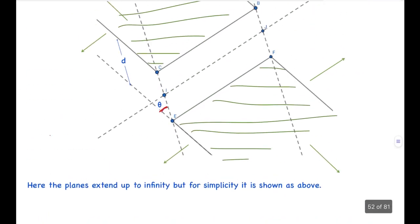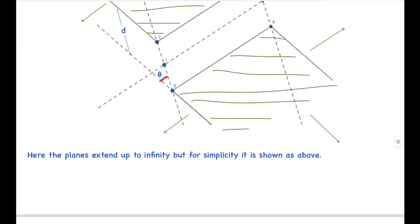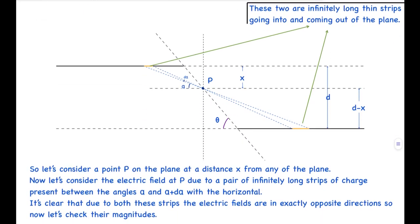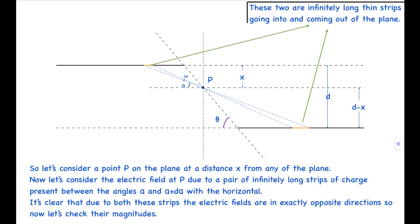Let's look at the side view. The side view is such that if we are looking from this side, this is one plane and this is the other plane, and these two are coming out of the plane and going into the plane with respect to the paper we are looking at. It's a bit hard to visualize but if you think slightly closely you will be able to. This angle is theta and the distance between the two planes is d.